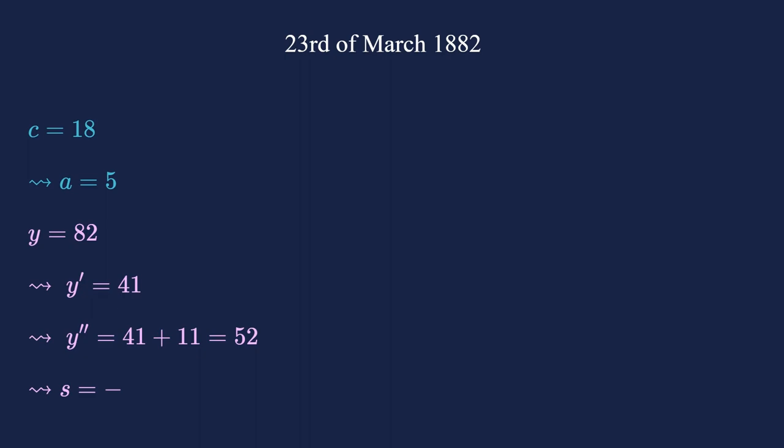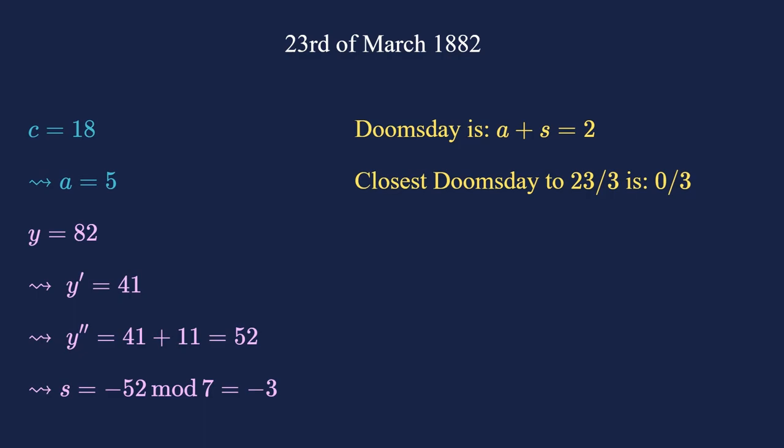Next, let us consider the 23rd of March, 1882. The century number c is 18, which means an anchor day of a equals 5. The year number y is 82. It's even, so we get y prime as 82 divided by 2 equals 41. That's odd, so we add 11 to get y2 prime as 52. Mod 7, it is 3, so the shift s is minus 3. Together, we get a plus s equal 2 as the weekday of the doomsdays in 1882. The 23rd of March is 23 days after the doomsday 0 of March, so it's weekday number 25, mod 7, that's 4, a Thursday.